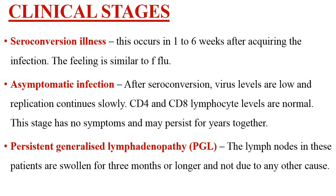Now let's see the clinical stages of HIV infection. The first stage is seroconversion illness, which usually develops one to six weeks after acquiring the infection, and the symptoms are similar to flu or a cold. This is followed by the asymptomatic infection stage, where virus replication begins very slowly. CD4 and CD8 lymphocyte counts remain normal and there are not many clinical manifestations; the patient can stay in this stage for a long period of time.